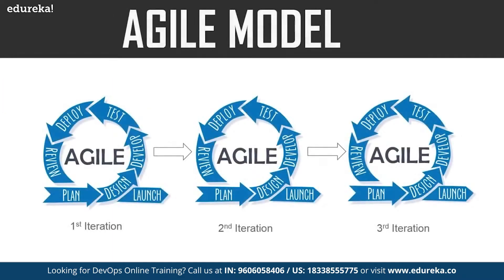The next model is the agile model. In this model, the software is broken down into various iterations. Each iteration has various phases such as planning, design, development, and so on. The duration of each iteration is generally two to eight weeks. In the agile model, you release the software in the first iteration, then gather feedback from end users or customers and incorporate those changes into the second iteration. You release the software again, and repeat the same procedure for the third iteration and so on.